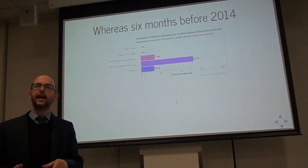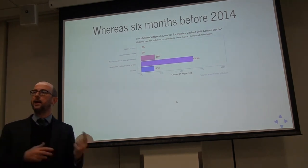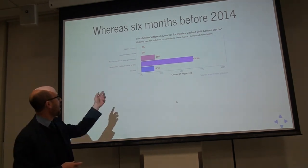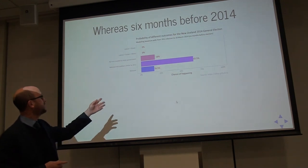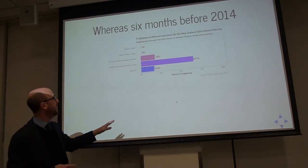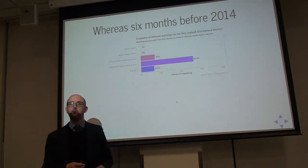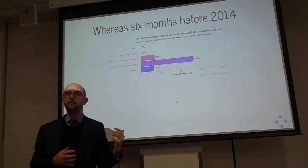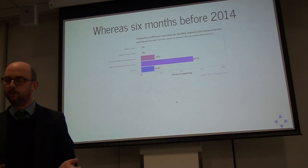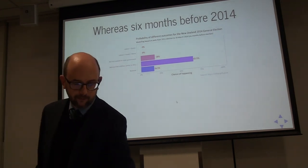When I take the same model I'm using now and go back to the data we had six months before the last election, I had quite different predictions — this was part of my validation. In fact, I was predicting basically a two-thirds chance of exactly what happened. That made me feel much more confident that the model was not completely insane and actually gave a reasonable prediction.